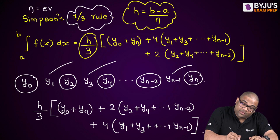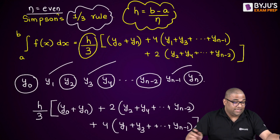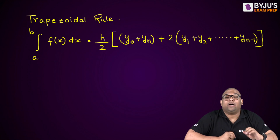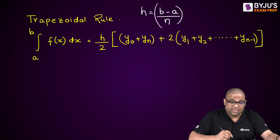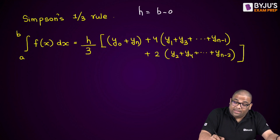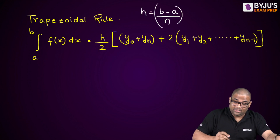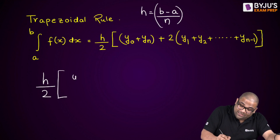One more major difference: in Simpson's one-third rule, n has to be even. Now let me rewrite the comparison clearly. For both rules, h = (b−a)/n. For trapezoidal it is h/2; for Simpson's it is h/3. Remember this distinction.